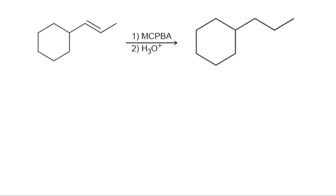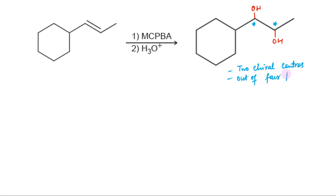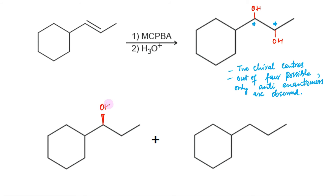Treating an alkene with MCPBA, followed by aqueous acid, results in the anti-addition of OH and OH across the alkene. In this case, two new chirality centers are generated, so we expect only the pair of enantiomers that would result from anti-addition. The stereochemistry of hydroxyl groups in one enantiomer will be opposite to that in the other. Thus, OH here above the plane and here down the plane. The other enantiomer will have opposite stereochemistry. The result is the formation of anti-enantiomers.